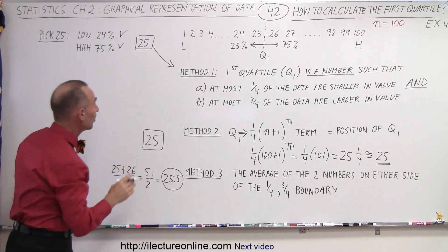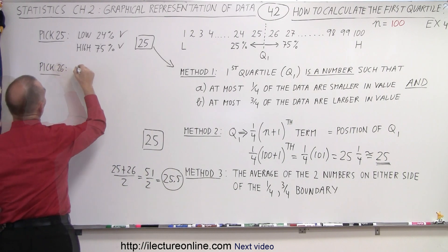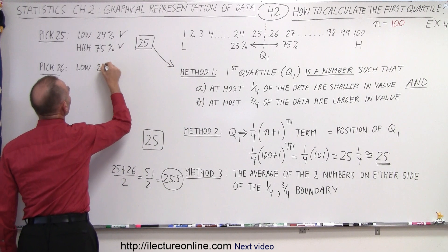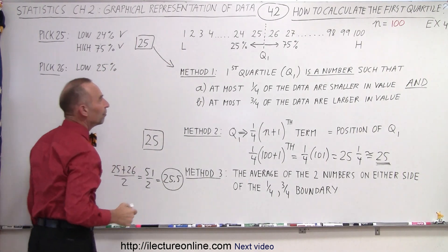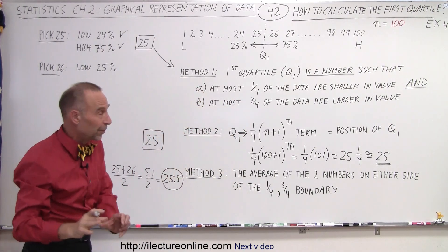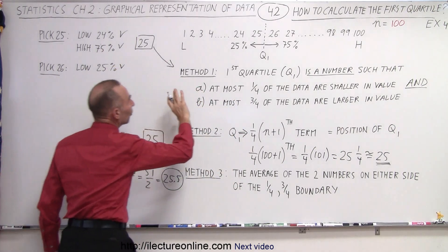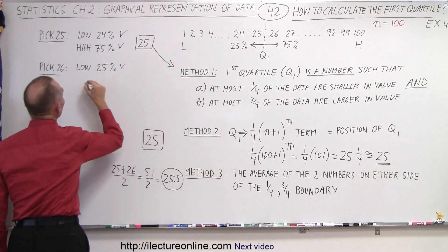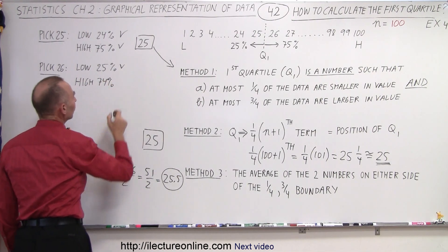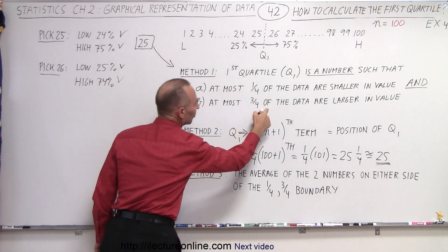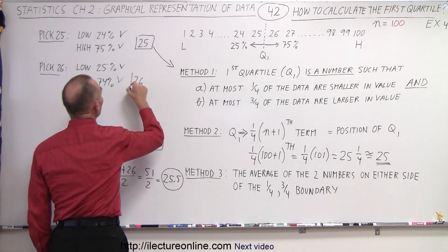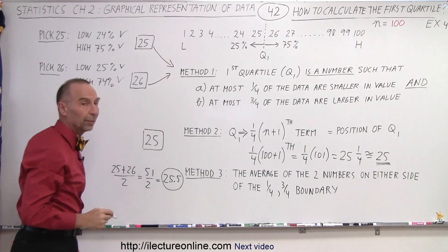How about the other pick, number 26? On the low side, we now have 25% of all data points to the left of our pick, and the rule says at most 25% — so 25% meets that condition. To the right of 26, we have 74%, which also meets the criteria because it says not more than three-quarters. So both 25 and 26 are legitimate picks for method 1.